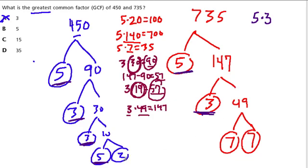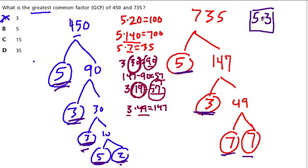What else? Well, 2 goes into 450, but does 2 go into 735? No — they don't share that factor. And 7 times 7 goes into 735, but do 7s go into 450? No, it's not listed. So the only thing we have in common is a 5 and a 3. So 5 times 3 is our greatest common factor. The answer is C: 15.